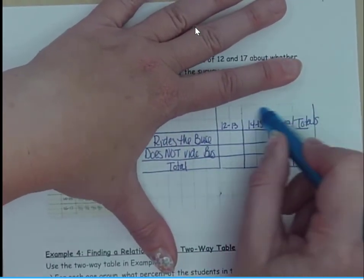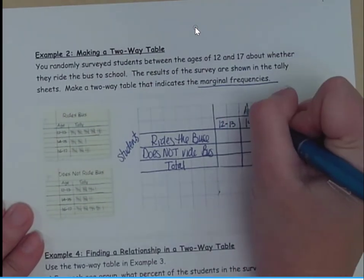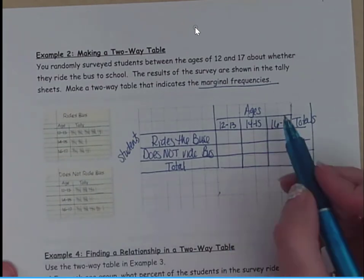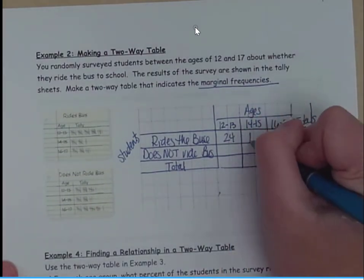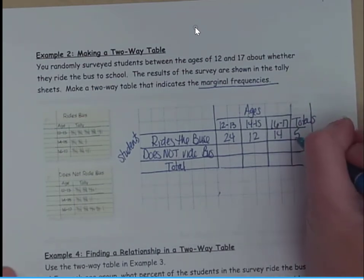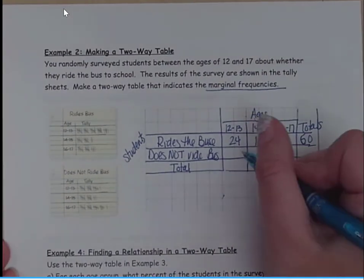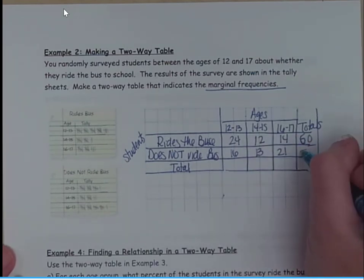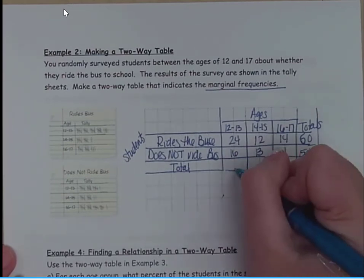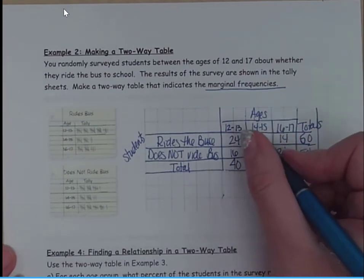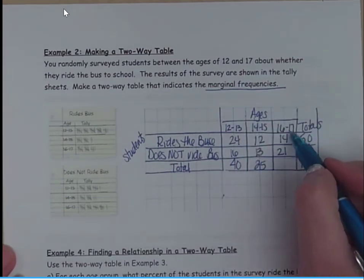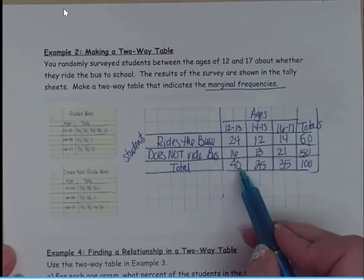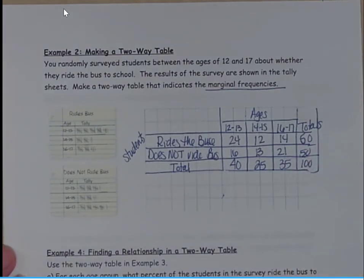All right, so we want to make sure we label all of these. I have 24 here, 12 here, 14 here, and 50 here. Then I've got 16 here, 13 here, 21, and that total is 50 for a grand total of 100 students surveyed. We've got 40 twelve to thirteen year olds, 25 fourteen to fifteen year olds, and then 35 sixteen to seventeen year olds. When I add those up they also get 100. So we want to make sure we've neatly displayed all of our data. Remember, marginal frequencies are simply the totals.